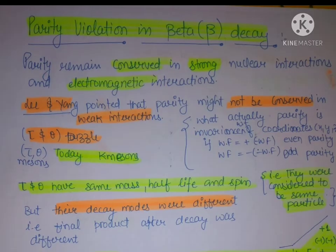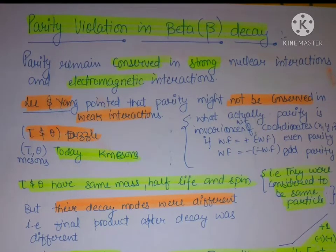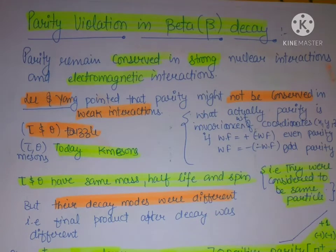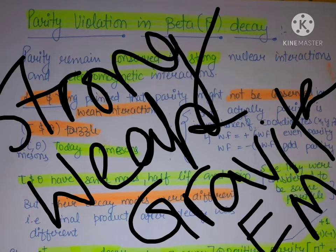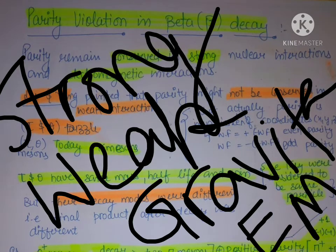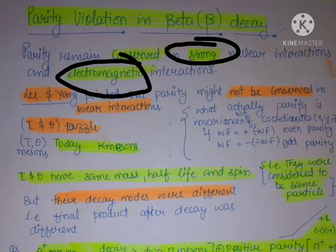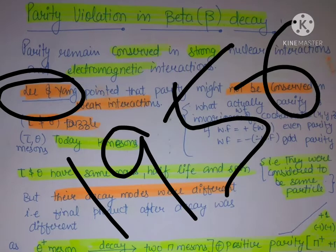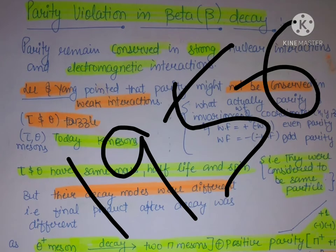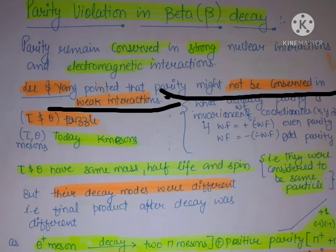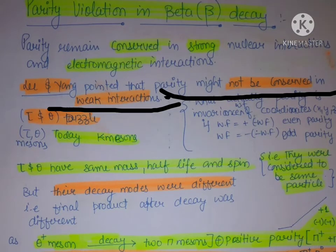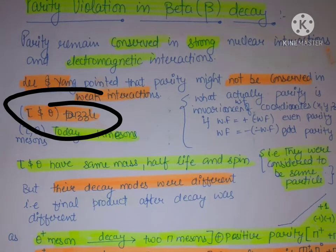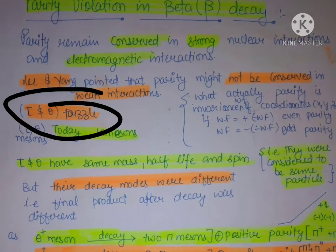Let's start with parity violation in beta decay. As you all know, parity remains conserved in strong nuclear interactions and electromagnetic interactions. Among the four interactions — strong, electromagnetic, gravitational, and weak — strong and electromagnetic interactions conserve parity. But two scientists, Li and Yang, in 1956 observed that parity might not be conserved in weak interactions. They gave the tau-theta puzzle.